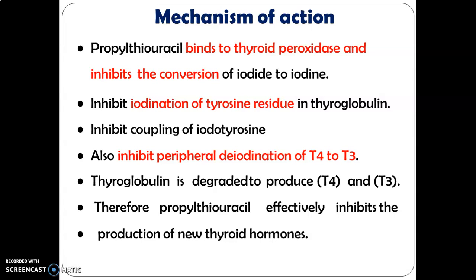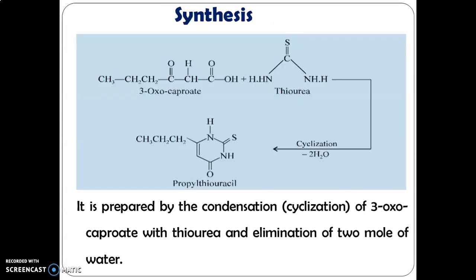Mechanism of action of propylthiouracil: it binds to thyroid peroxidase and inhibits the conversion of iodide to iodine. It inhibits iodination of the tyrosine residues and inhibits the peripheral deiodination of T4 to T3. Thyroglobulin is degraded to produce T4 and T3; therefore, propylthiouracil effectively inhibits the production of thyroid hormones. Synthesis of PTU occurs when 6-oxocaproate is treated with thiourea and undergoes cyclization, forming PTU via condensation and elimination of two water molecules.